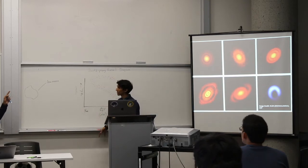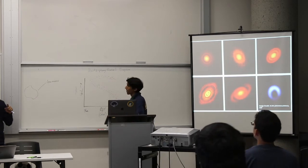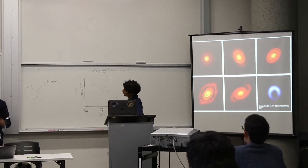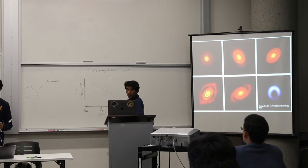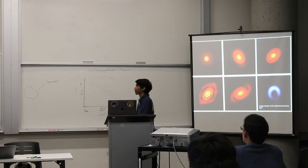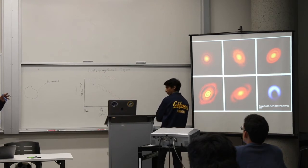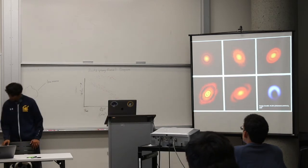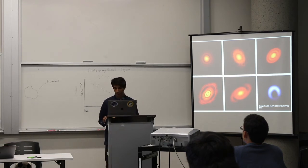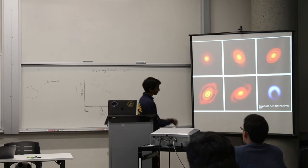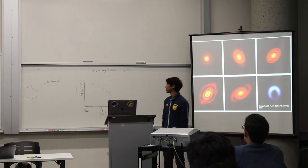Why is it that cooler stars are less bright on the main sequence? Think about the delicate equilibrium between gravitational force pulling stars in and the light pressure pushing them out. Discuss amongst yourselves and try to figure out why this is the case.